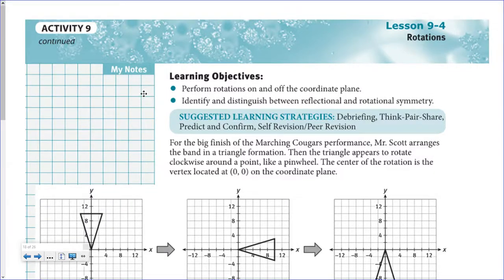Today we're looking at lesson 9.4 dealing with rotations. We're again looking at the marching band in a triangle formation, and the triangle is going to appear to rotate clockwise around a point, like a pinwheel. The center of the rotation is located at (0, 0) on our coordinate plane. The first figure shows the triangle, and then it gets rotated to the second figure.